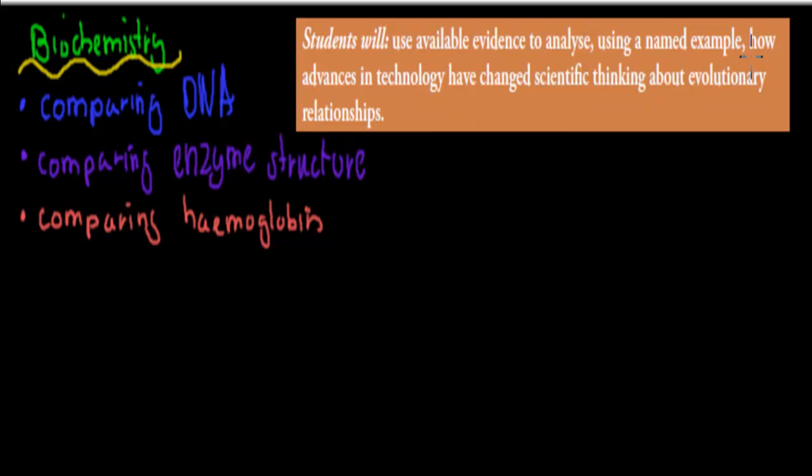So what that means is we have to look at how technology, for example different machines, different procedures, how they have helped us to understand evolution better. Plus, also important, we have to give a named example. So we have to name one of the technologies and be able to explain it as well to a degree.